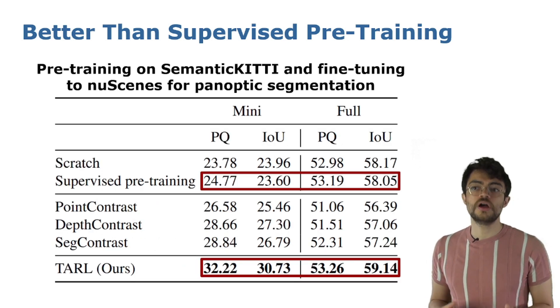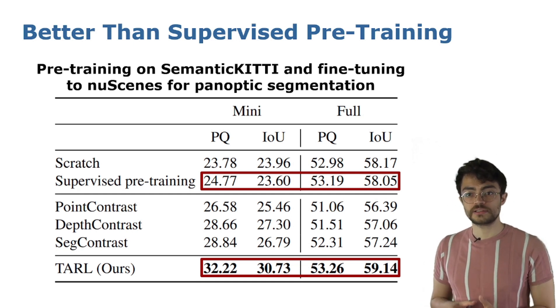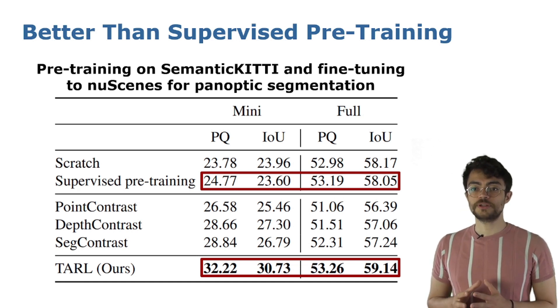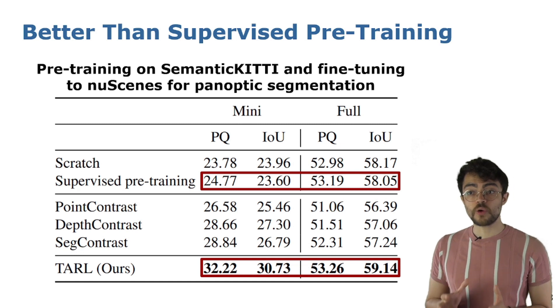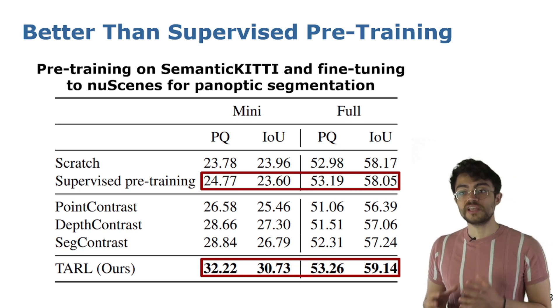For panoptic segmentation, our method again surpassed the previous state-of-the-art methods, and also achieved better performance than the supervised pre-training, especially in the mini training set, where there is a clear performance gap. These results suggest that our pre-training could be used in the wild with raw collected data, and would still be a better pre-training than taking the effort to label the data beforehand.